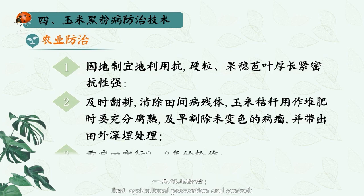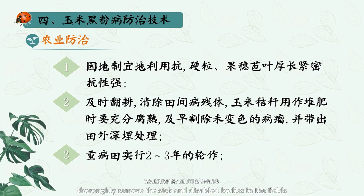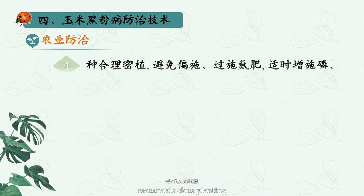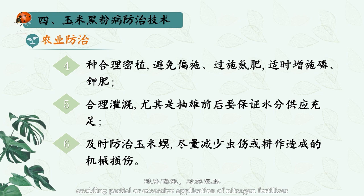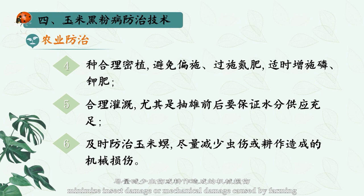First, agricultural prevention and control. Use disease-resistant varieties according to local conditions. Turn over the fields in autumn. Thoroughly remove sick plant residues from the fields and implement 2-3 year crop rotation in seriously affected fields. Practice reasonable close planting, avoid partial or excessive application of nitrogen fertilizer, irrigate in a timely manner, and control corn borer to minimize insect damage or mechanical damage caused by farming.